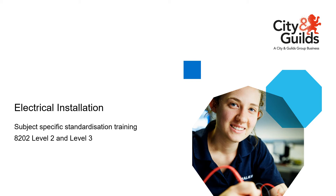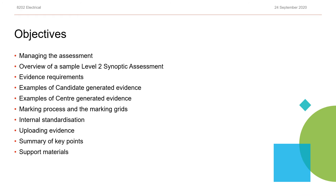Hello and welcome to this subject-specific standardisation training for 8202 electrical installations level 2 and level 3. One clear advantage of technicals is that it can reward high-achieving candidates over those that just meet industry requirements. This isn't possible with qualifications such as 2365 because the marking checklist didn't differentiate between candidates. In order for differentiation to be achieved, marking must be supported by strong items of evidence. During this presentation we'll look at items of evidence and also tips for managing the assessment.